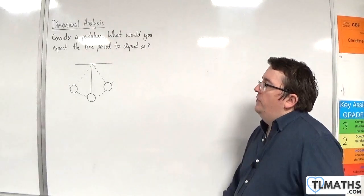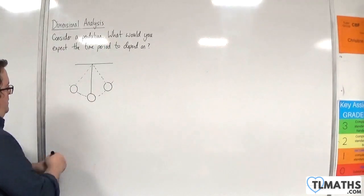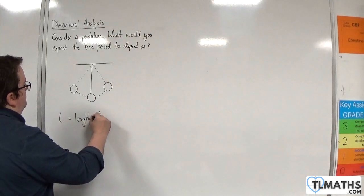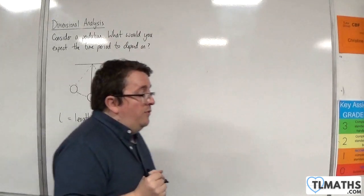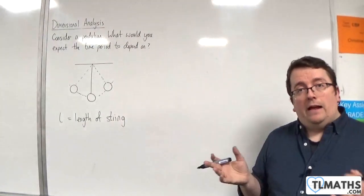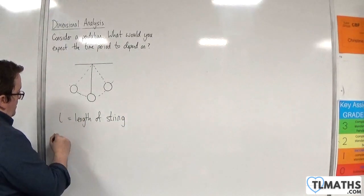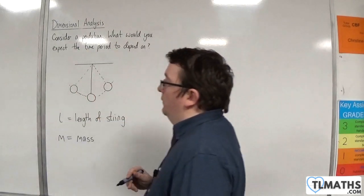You might think about the length of the string. So L could be equal to the length of the string. You might think that the mass of the ball on the string might have something to do with it. So we'll use M for mass.